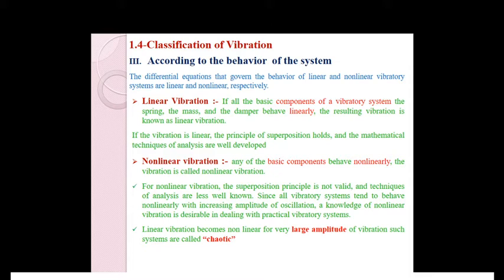The basic components of vibratory systems are mass, spring, and damper. All three follow certain equations, and we can generate a governing equation or behavioral equation of the system. Linear vibrations can be defined as: if all the basic components — mass, damper, and spring — of the vibratory system behave linearly, the resulting vibration is known as linear vibration.